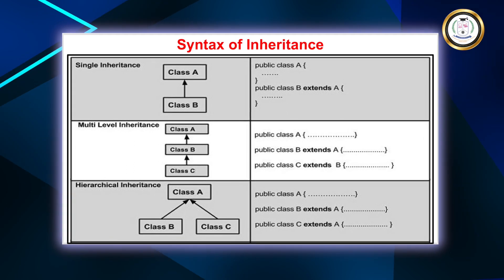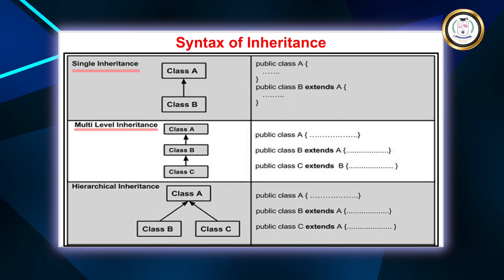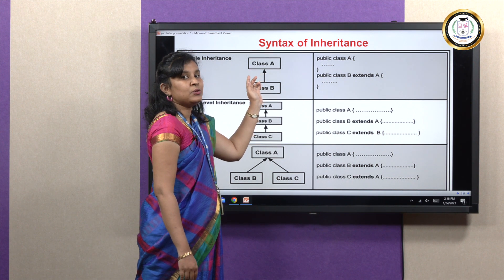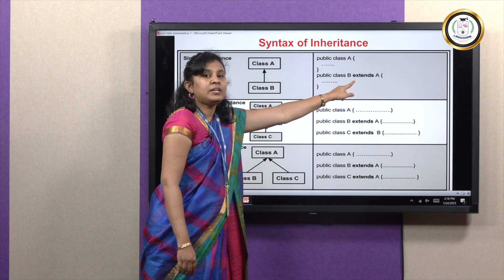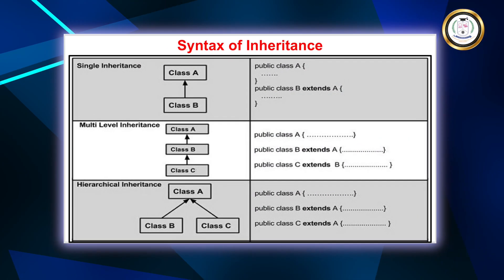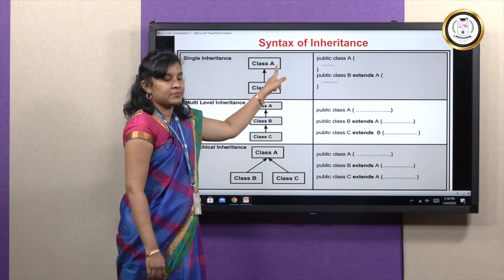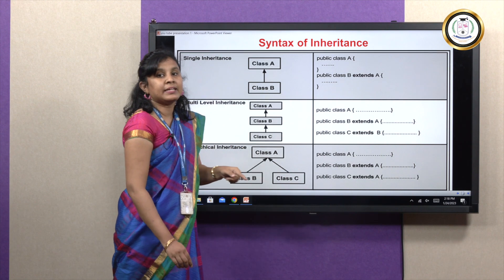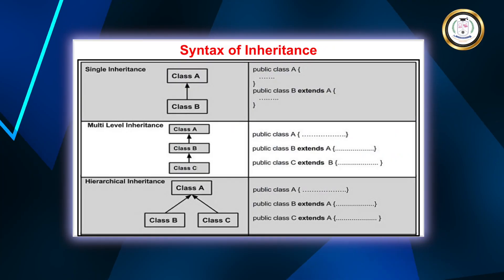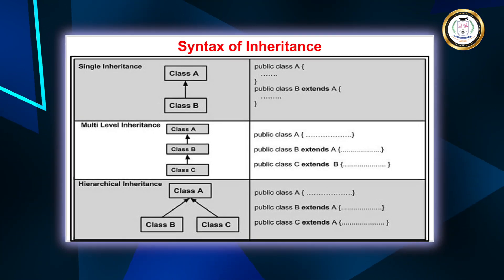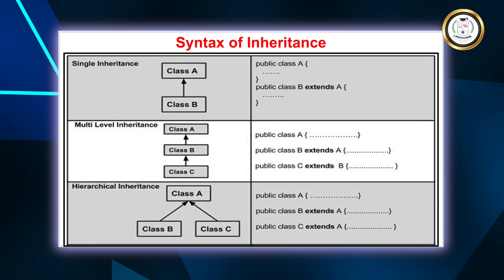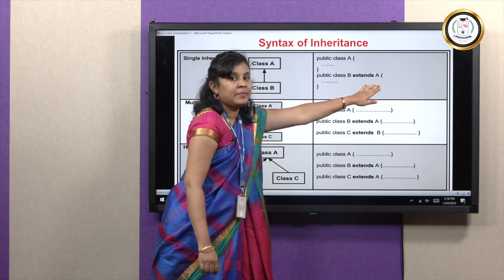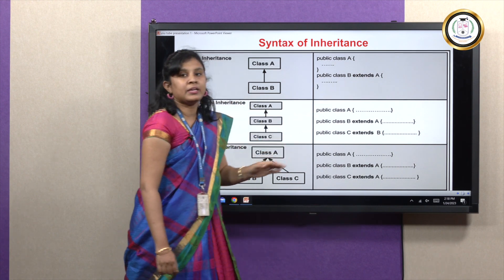This slide shows the syntax for single inheritance, multi-level inheritance, and hierarchical inheritance. For single inheritance, we use the keyword 'extends'. Public Class A is the Superclass — a standalone class made public so it can be inherited. The derived class B is declared as: public class B extends A. Here 'extends' is the keyword used to inherit the properties of A, the base class.